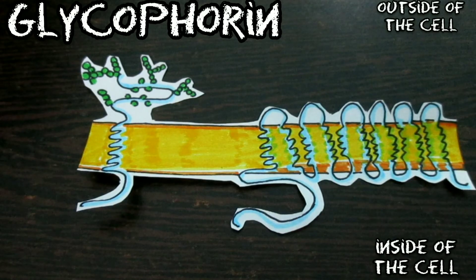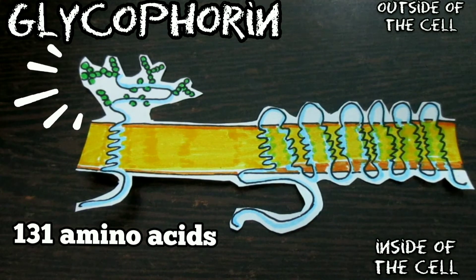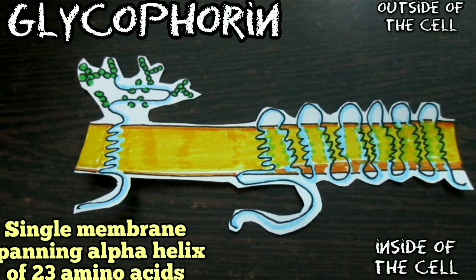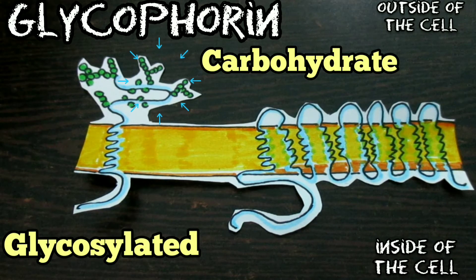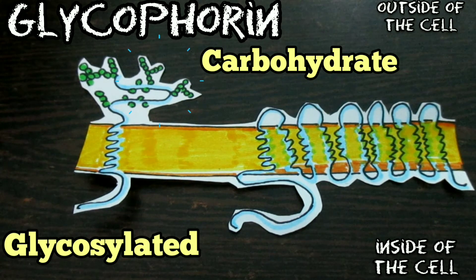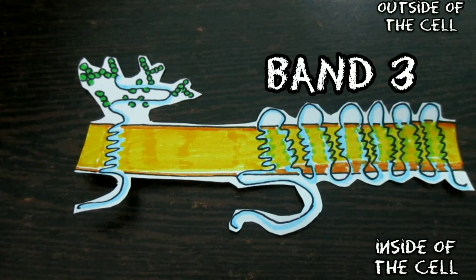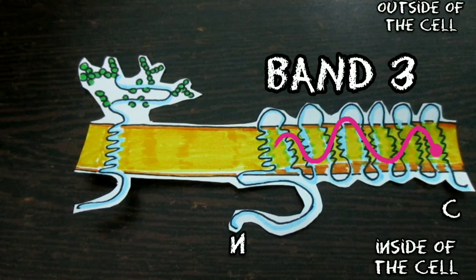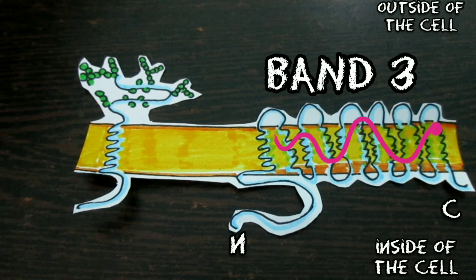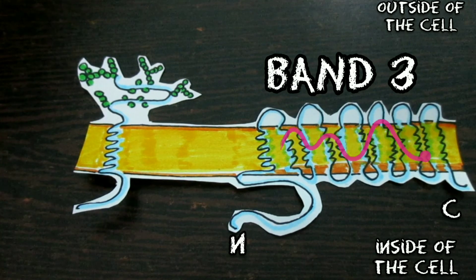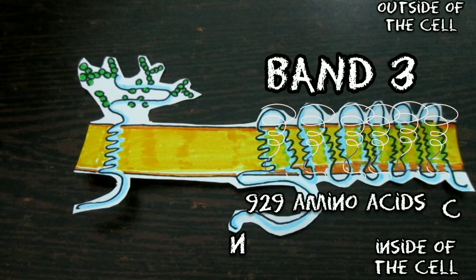The two major integral membrane proteins of red blood cells are glycophorin and band 3. Glycophorin is a small glycoprotein of 131 amino acids with a molecular weight above 30,000 that crosses the membrane with a single membrane-spanning alpha helix of 23 amino acids. It is heavily glycosylated, containing about 50% carbohydrate, with the glycosylated amino-terminal portion of the polypeptide chain exposed on the cell surface. The other major transmembrane protein of red blood cells is band 3, which is the anion transporter responsible for the passage of bicarbonate and chloride ions across the red blood cell membrane.